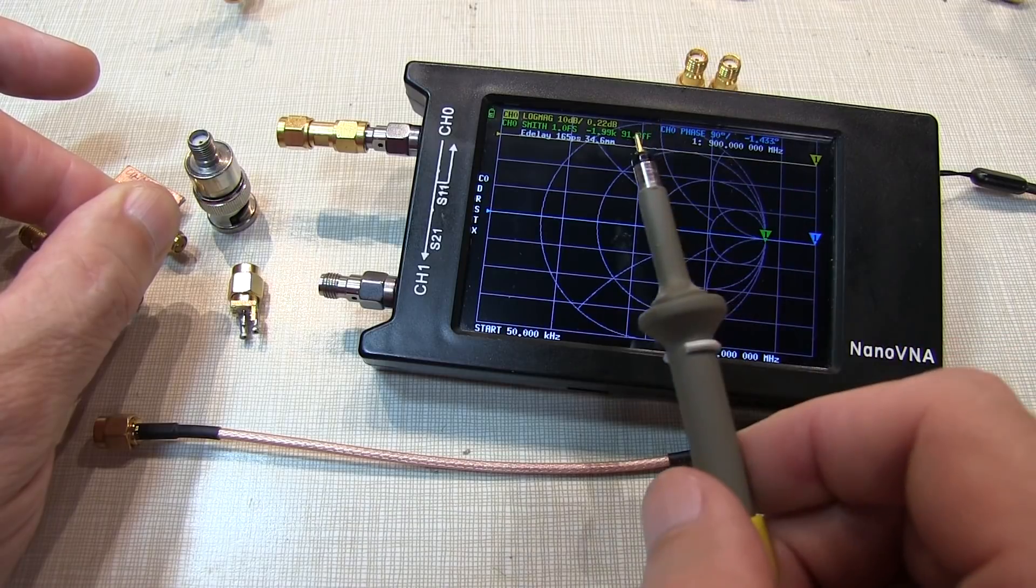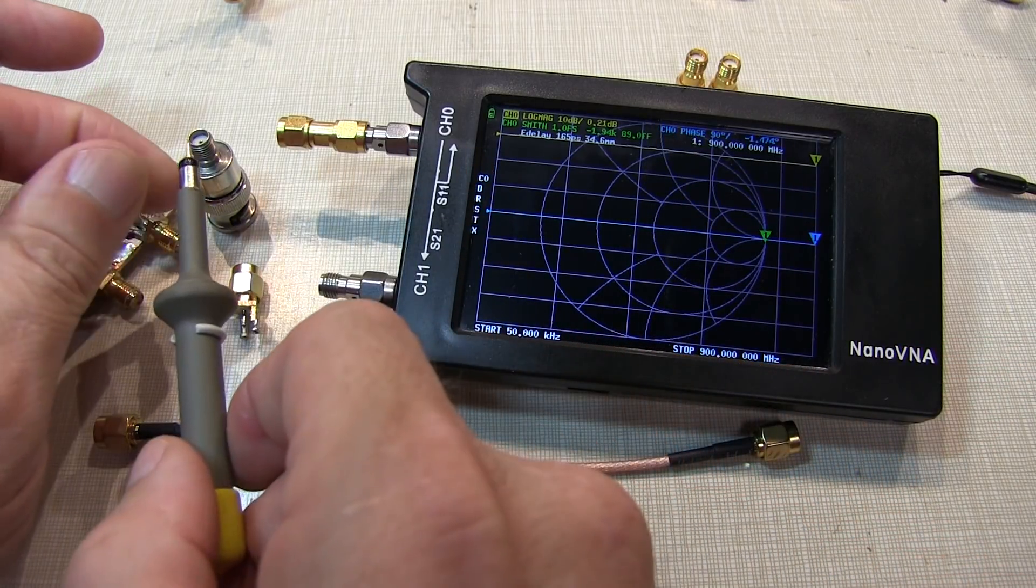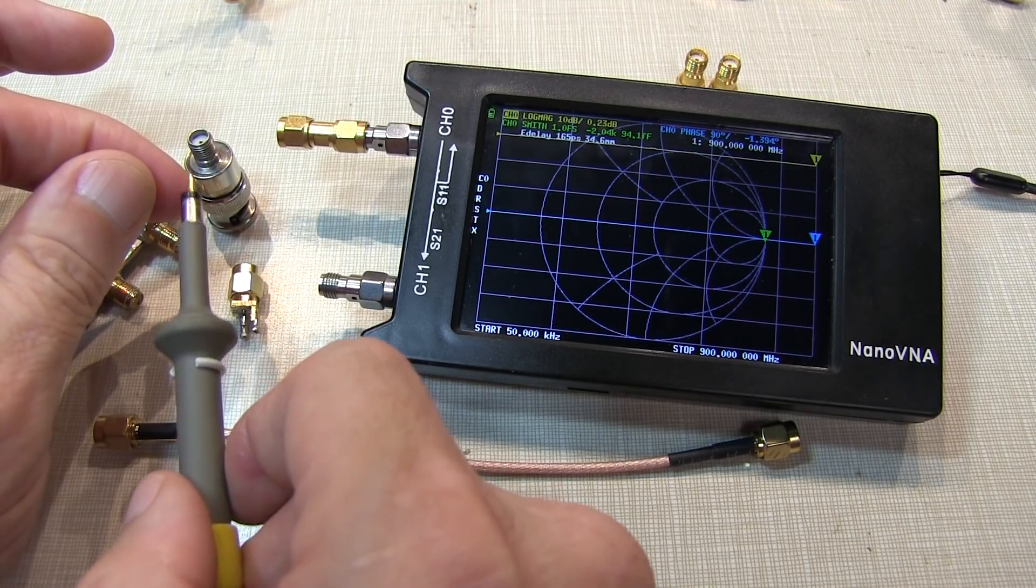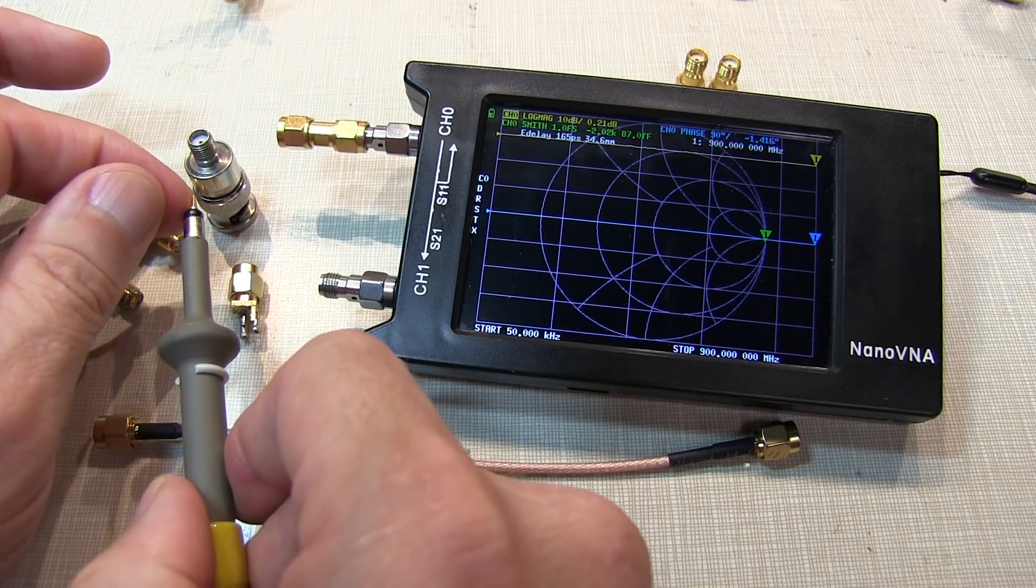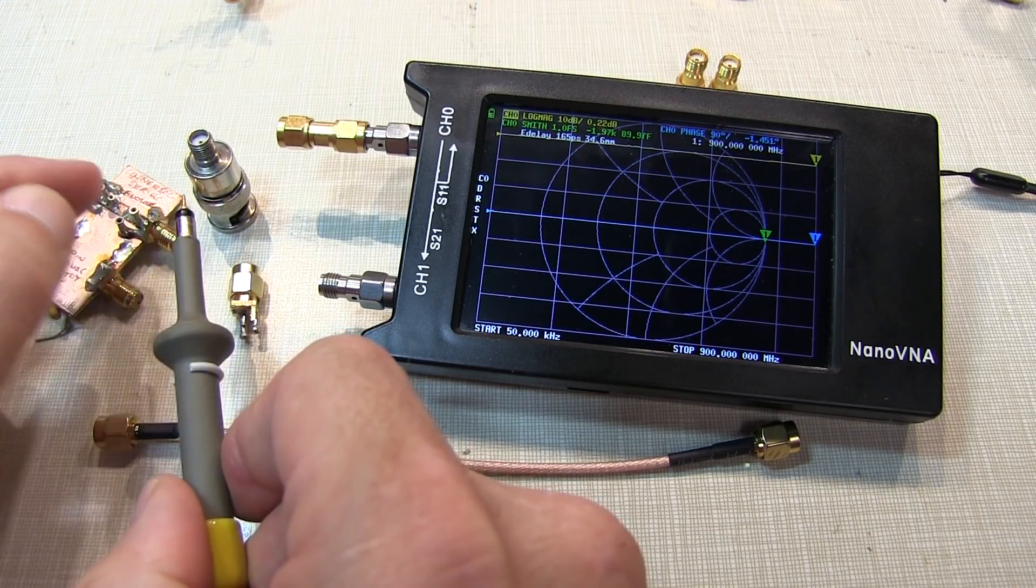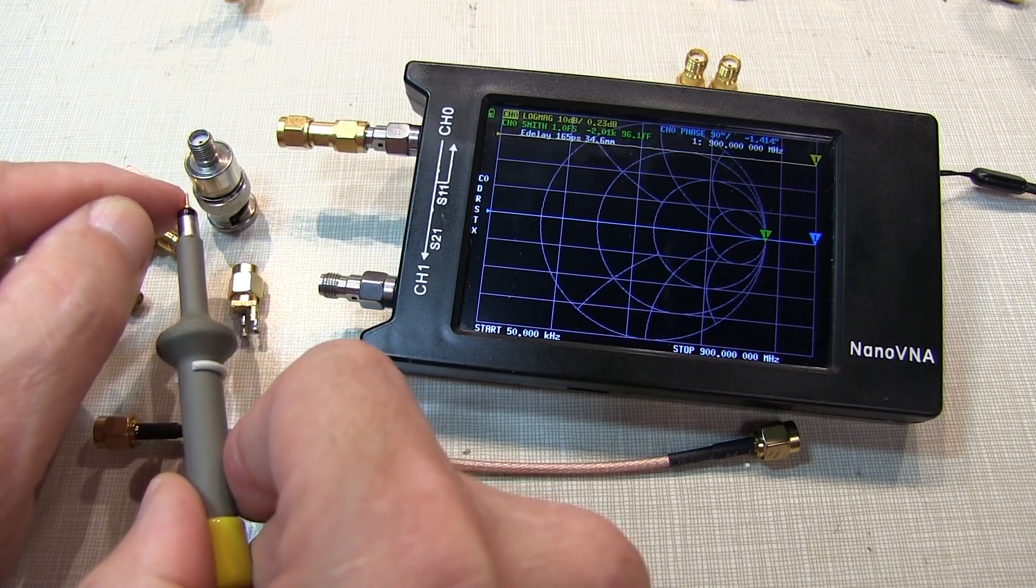If not, then you may be able to apply port extensions to actually move that reference plane right to that spot on the board and then make that your new calibration plane so that when you measure the complex impedance, you can measure the complex impedance of that antenna structure, for example, so that you can design a matching network to be placed right there.